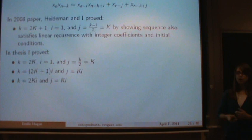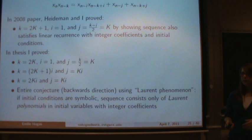So all three of these were proved with the same method, but it became clear that this wasn't going to be an all-encompassing technique. So instead, I looked at what's called the Laurent phenomenon. I was able to show the entire conjecture in the backwards direction: if k, i, and j satisfy those criteria, then we have integrality.